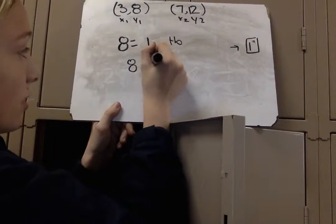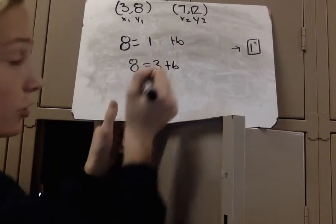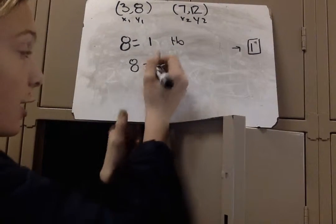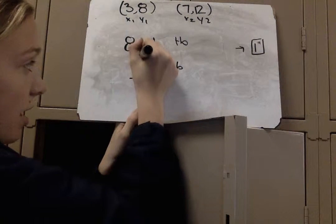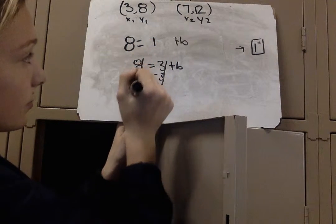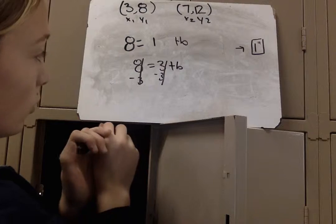So, it's going to be 8 equals 3 plus b, and then we're just going to solve that like a regular equation. We're going to subtract 3 from the right as well as the left, and then that will equal 5.